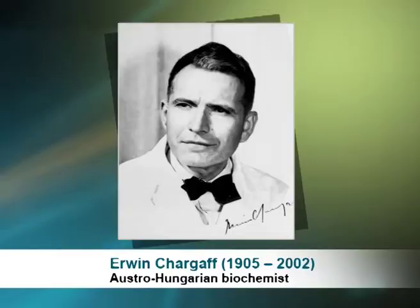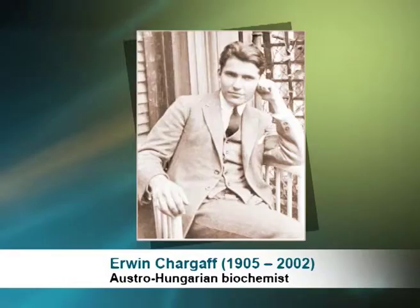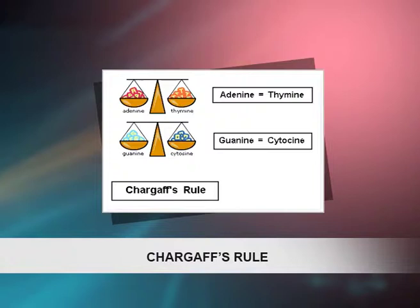Chargaff's rule: In 1950, Chargaff pioneered paper chromatography of nucleic acids to determine how much of each component nucleotide was contained in a DNA sample. Each species differed in the amounts of A, C, G, and T, but within a species the proportions of each are identical no matter which tissue the DNA is extracted from. Chargaff's further discovery was that the proportion of adenine in any DNA molecule was always equal to the proportion of thymine, and likewise the amount of guanine and cytosine always correspond — a rule that became known as Chargaff's ratios.